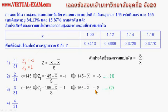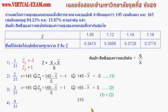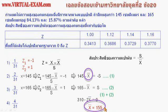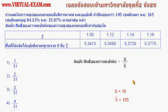Z1 สอดคล้องกับ X = 145 และ Z2 สอดคล้องกับ X = 165 นำสมการทั้งสองมารวมกัน X-bar + X-bar = 2X-bar และ 145 + 165 = 310 ดังนั้น X-bar = 155 cm